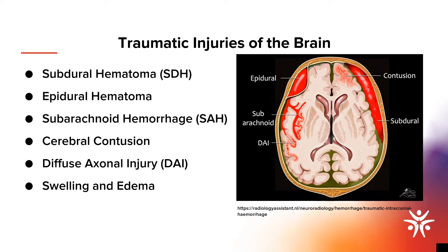Some common traumatic brain injuries we encounter when entering patients into the trauma registry include subdural hematoma, epidural hematoma, subarachnoid hemorrhage, cerebral contusion, diffuse axonal injury or DAI, and secondary injuries of swelling and edema. The following slides will go over these injuries, provide some coding tips, and review some case studies.